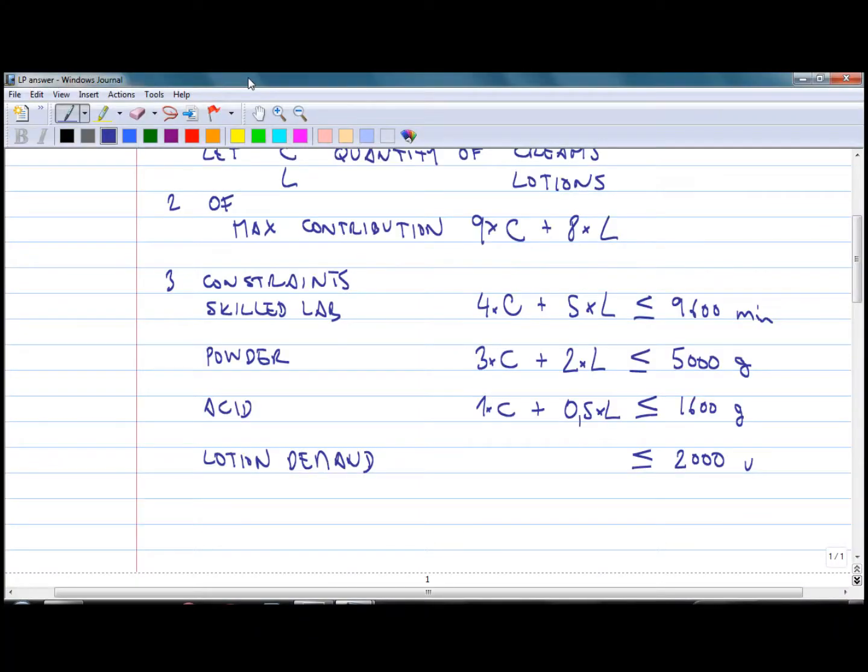The constraints for powder and acid are as follows. The remaining constraint is related to lotion demand. There is just a number of units that should be lower than 2000. Don't forget also non-negativity constraints because you are not going to produce negative numbers of creams and lotions.